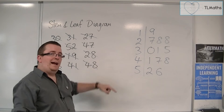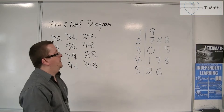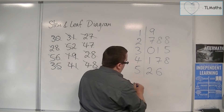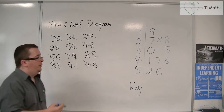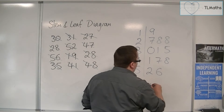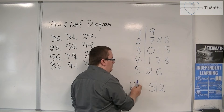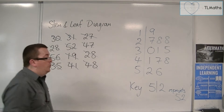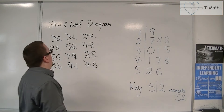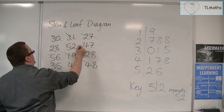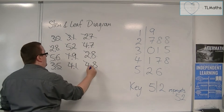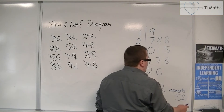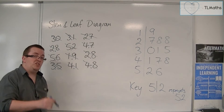This is the stem, and these are the leaves coming off the stem. In order to make sure that this makes sense for the data we're looking at, we have to include a key, because the key tells us the units we're working in. So we can say that 5|2 represents 52, because it could have represented 5.2. If all of these had a decimal point in the middle, I could represent it with precisely the same stem and leaf diagram, but I would need a key to say that 5|2 actually represents 5.2 and not 52.